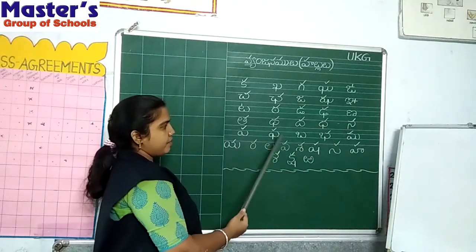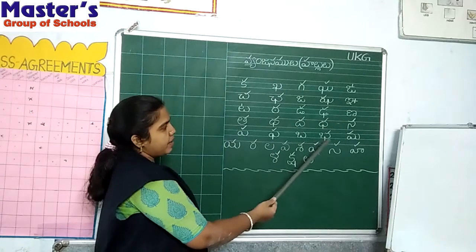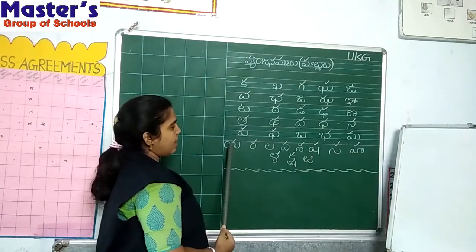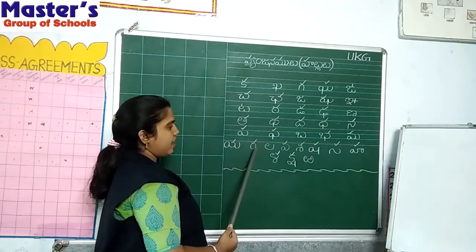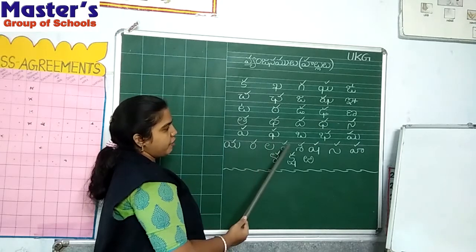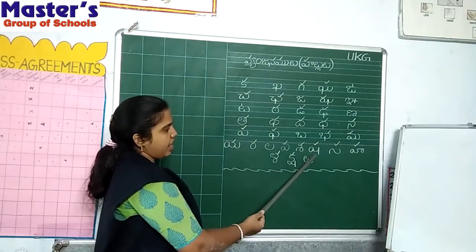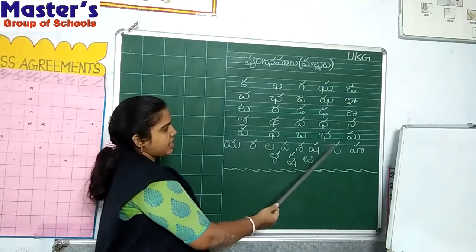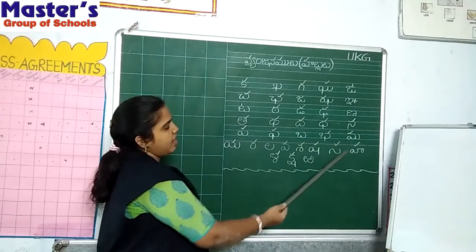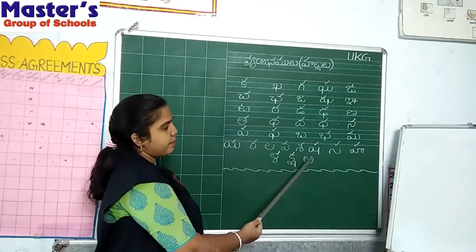Pa, Ha, Ba, Bha, Ma, Ya, Ra, La, Va, She, Sha, Sa, Ha, Ala, Aksha.